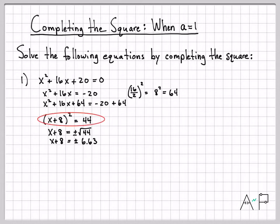I have x plus 8 quantity squared equals 44. If I take the square root of both sides, on the left, the square goes away, and I'm left with x plus 8. And on the right, I have plus or minus the square root of 44. The square root of 44 is approximately 6.63. So now I'm left with this line right here.